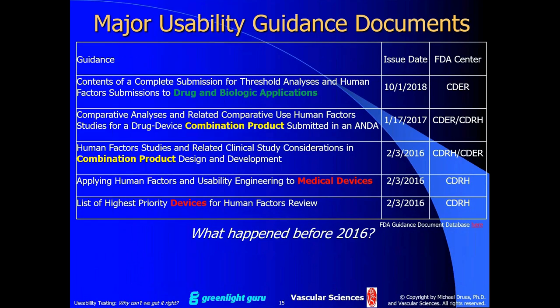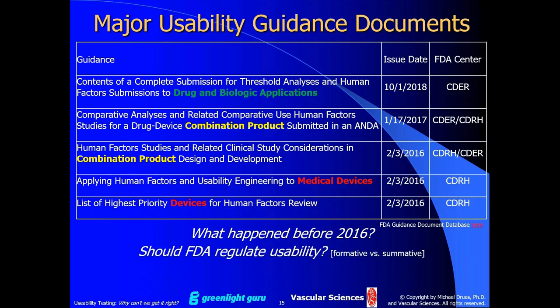Here are some of the major usability guidances that have come out of FDA. I want to point out that these are all fairly recent — within the last half dozen years. So what happened before 2016? Remember, the infusion pump fiasco happened roughly a decade ago. There were some earlier versions of guidance, but it really wasn't until very recently that this was recommended. But it does beg the question: should FDA regulate usability, especially when it comes to formative usability?